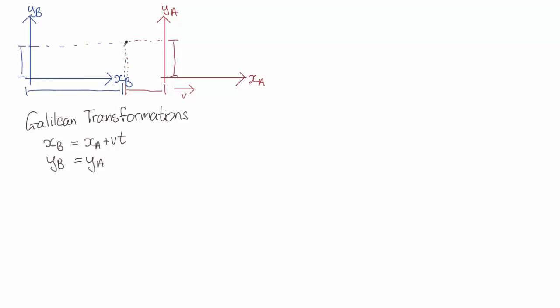We've seen that we can record the coordinates of this event with respect to either reference frame and using the Galilean transformations we can transform from one reference frame to the other.